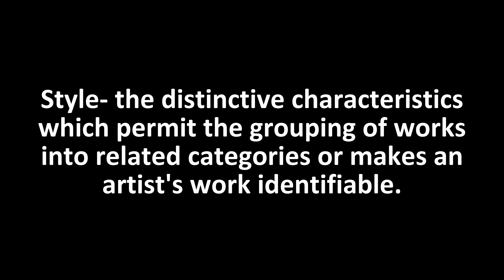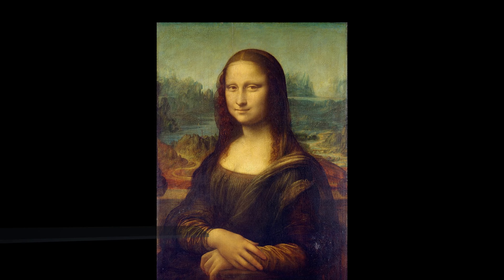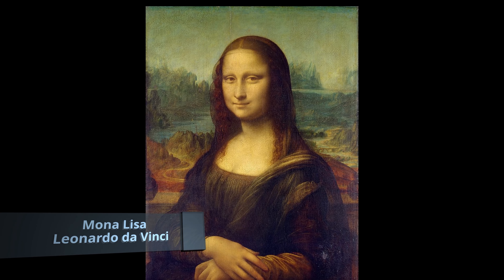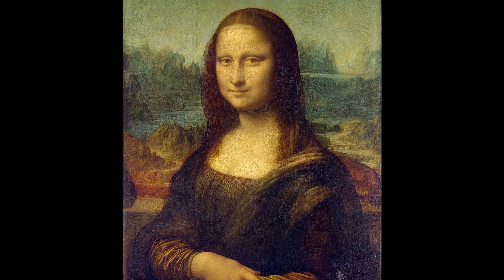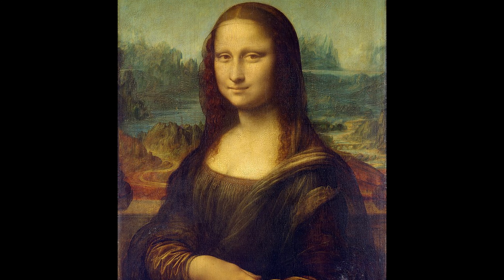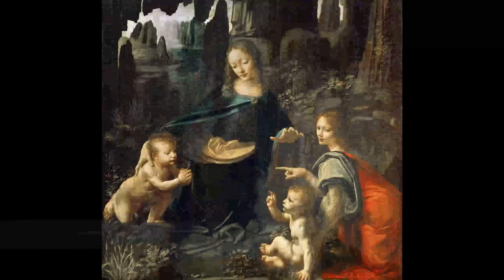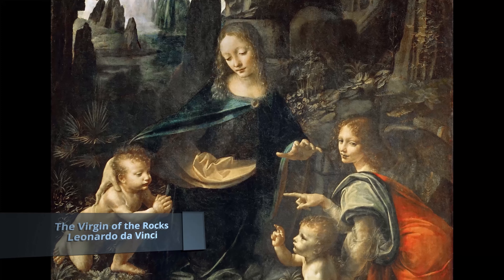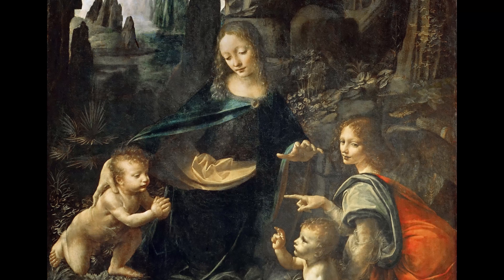Style: the distinctive characteristics which permit the grouping of works into related categories or make an artist's work identifiable. The Italian Renaissance artist Leonardo da Vinci, one of my personal favorites, used muted color palettes and smooth smoky shadows known as fumato in his oil paintings, which can be seen in the very famous Mona Lisa, painted between 1503 and 1506, and his Virgin on the Rocks, painted around 1483 to 1486. You can see the soft shadows all over the figures — the way he models his women is quite similar and immediately makes his work recognizable.